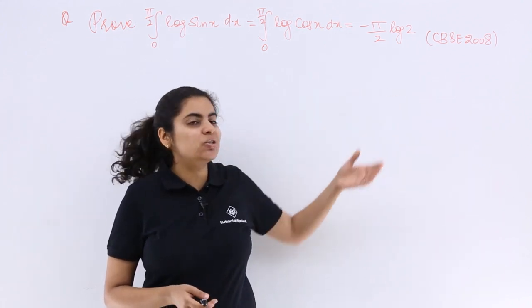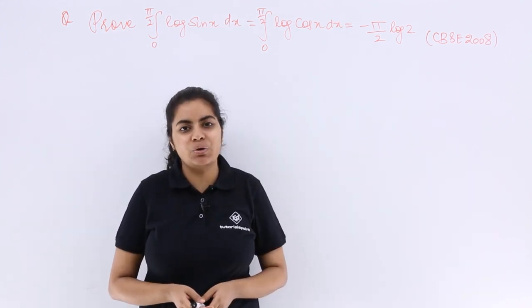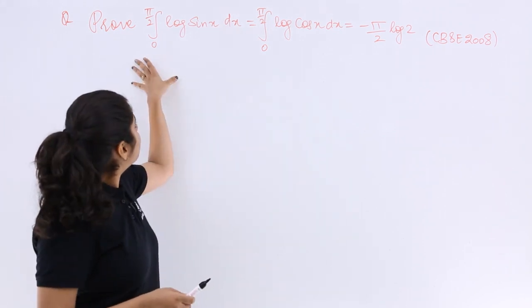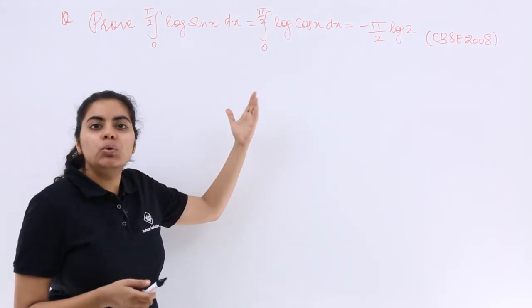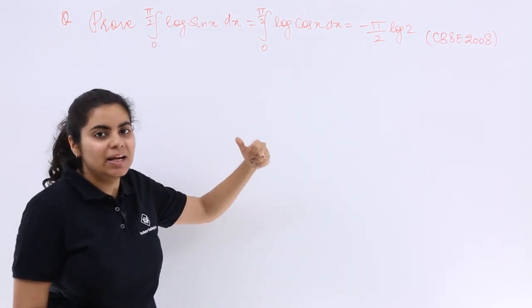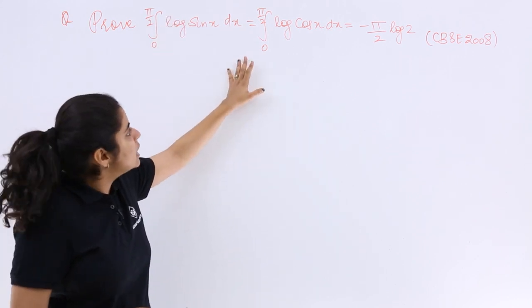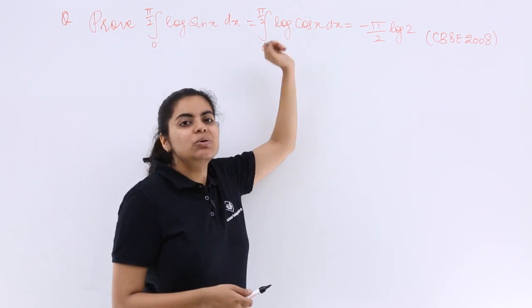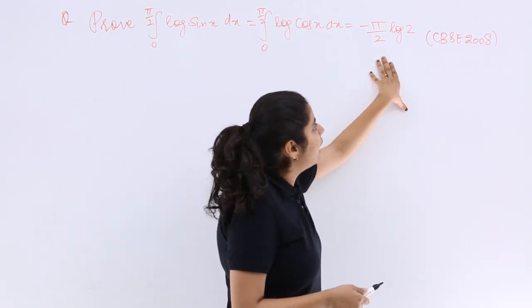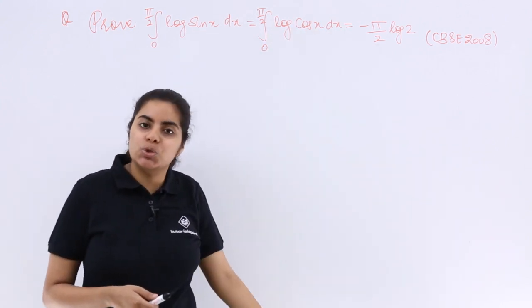Let's see this question, CBSE 2008, previous year examination question. It says prove that log sin x dx from 0 to π/2 is equal to log cos x dx from 0 to π/2 is equal to minus π/2 log 2.